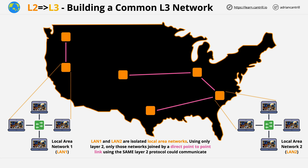We also might have point-to-point links which use a different layer 2 protocol. In this example, let's say that we had a satellite connection between two of these locations. This is in blue, and this is a different layer 2 technology. Ethernet is one layer 2 technology which is generally used for local networks.